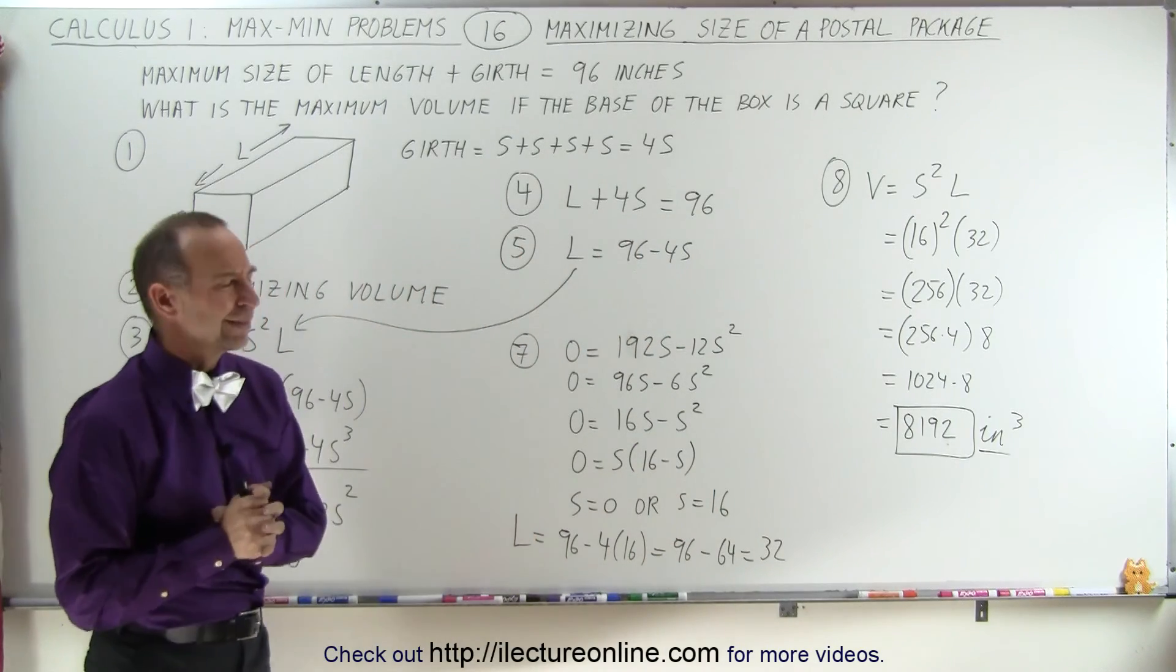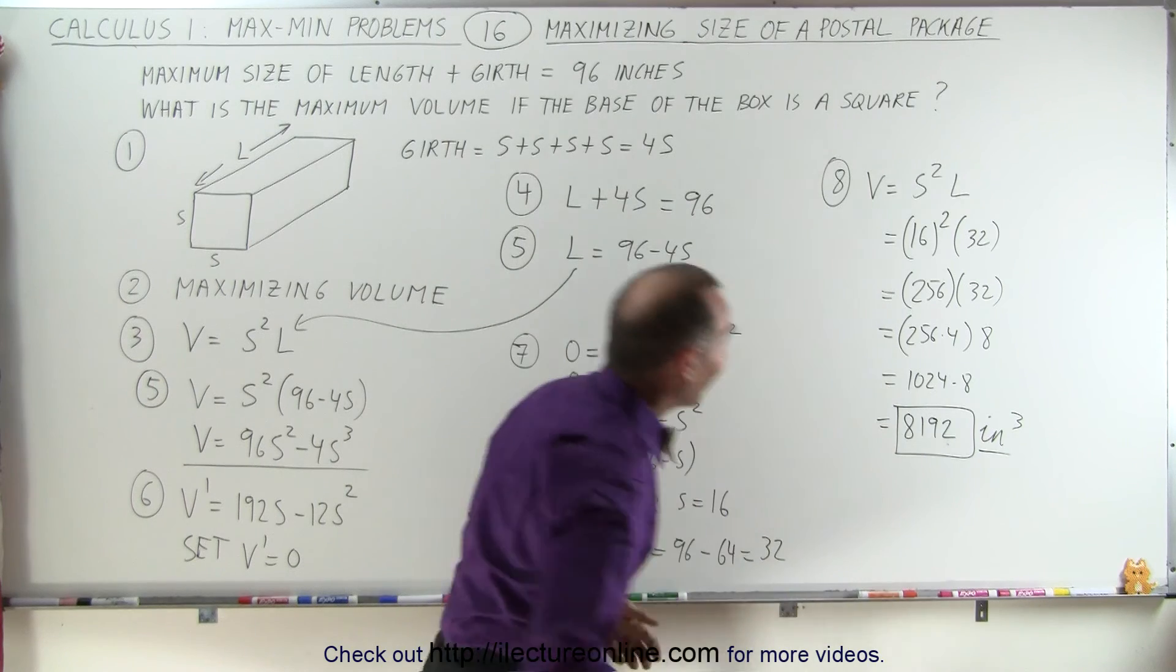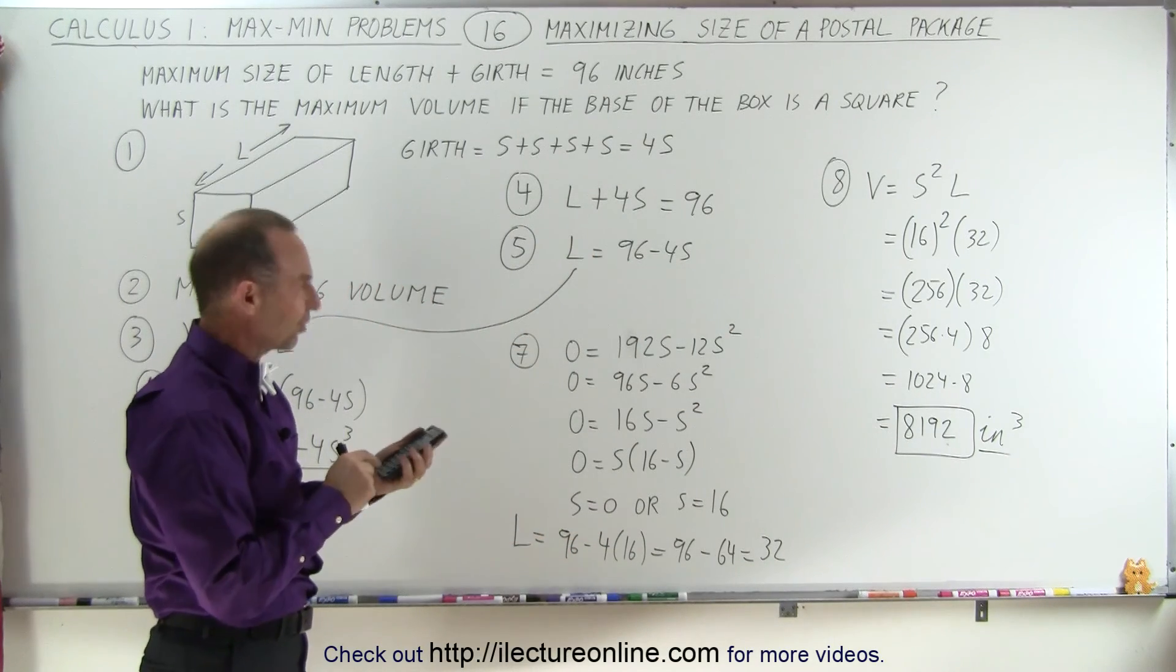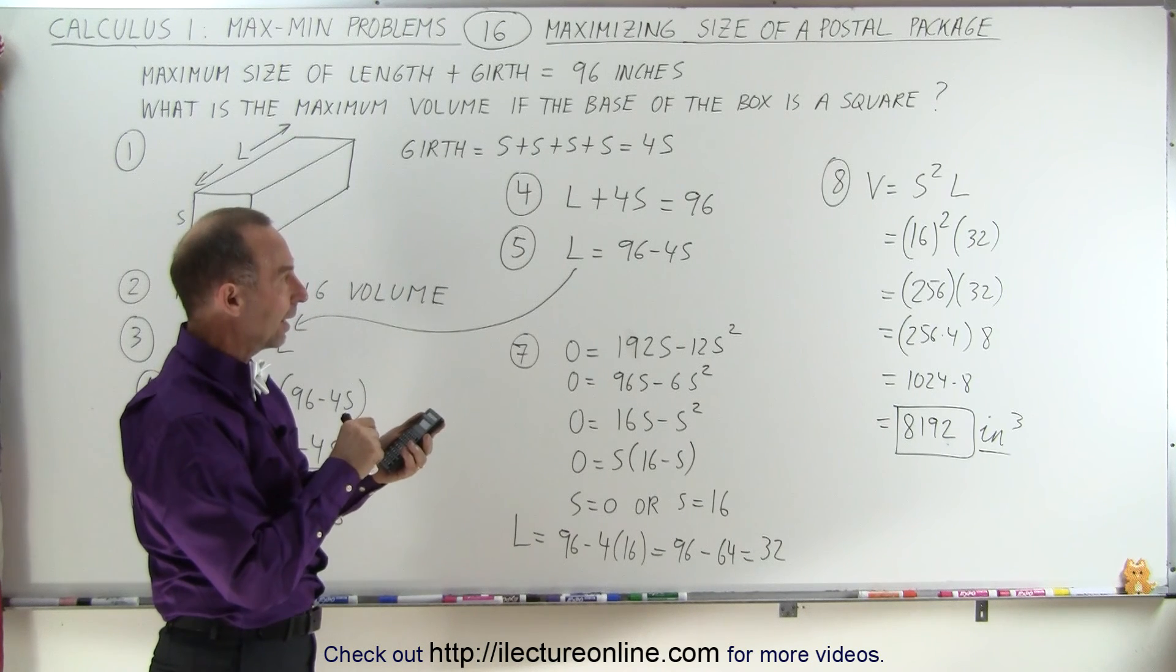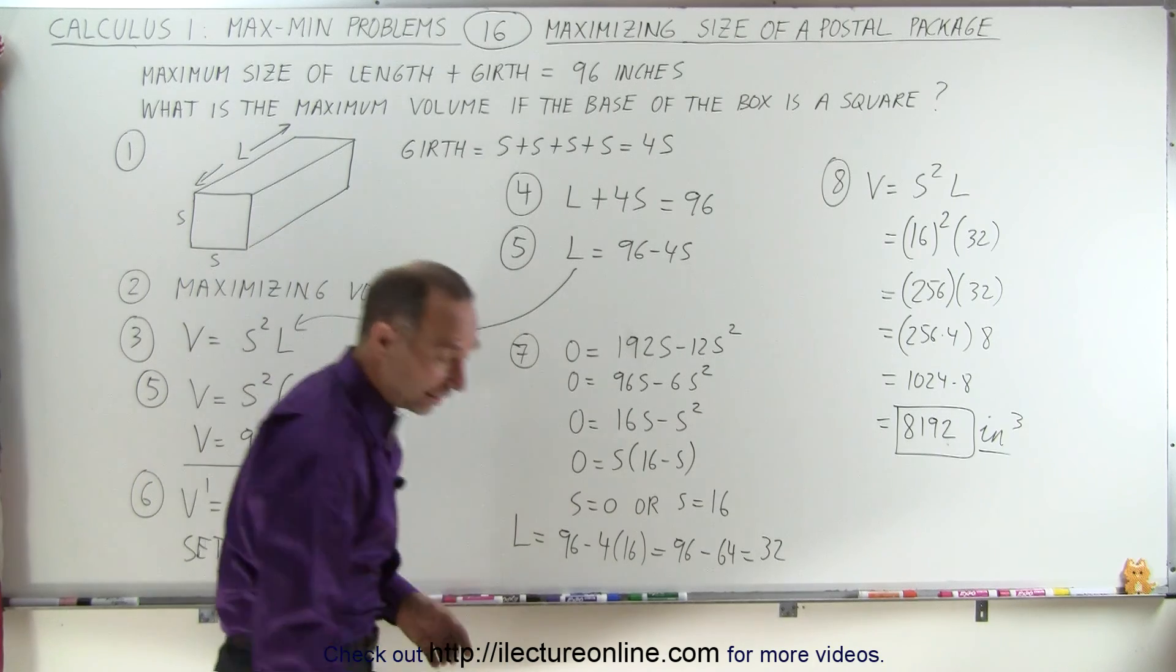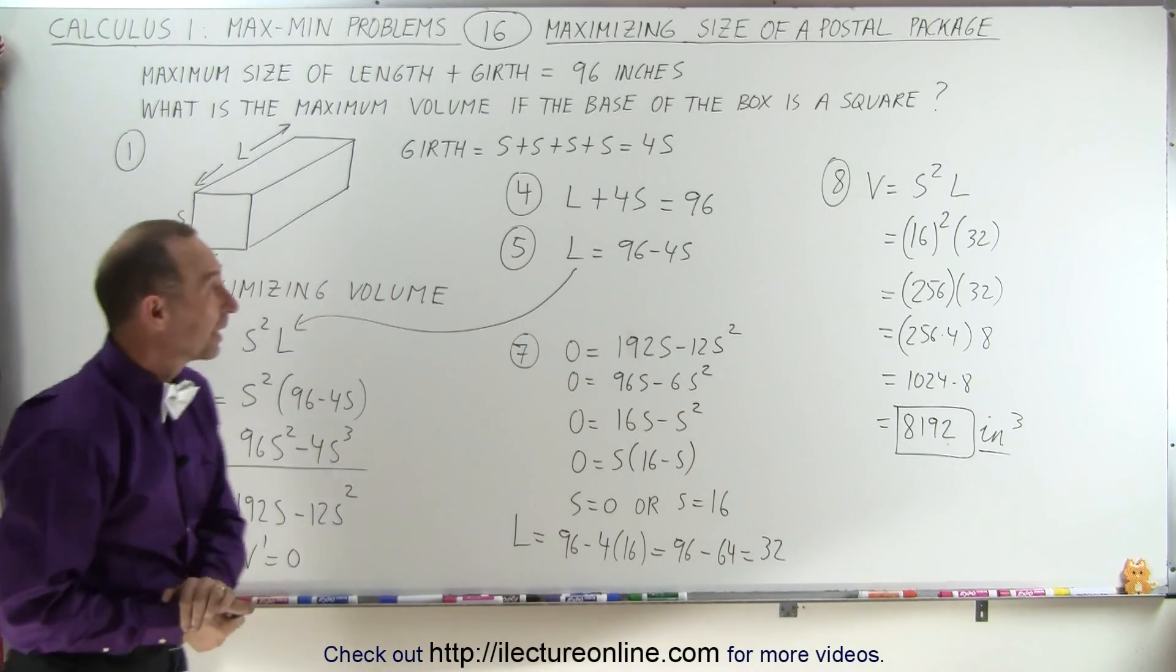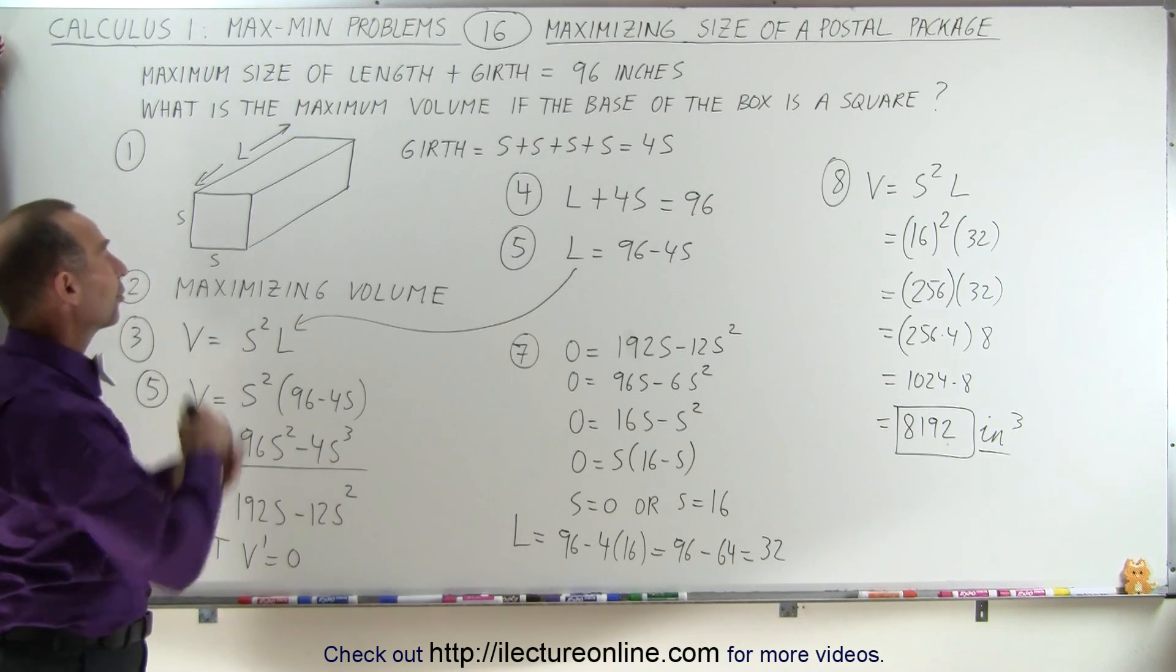Let's verify with a calculator: 16 squared times 32 equals 8192. So the maximum volume is 8192 cubic inches, since everything is measured in inches here.